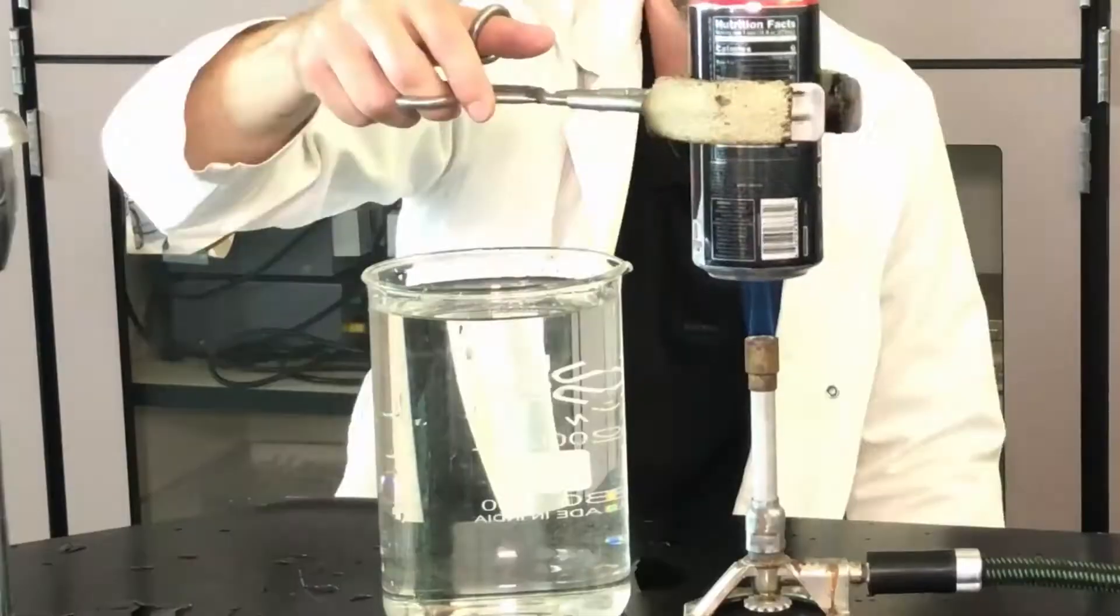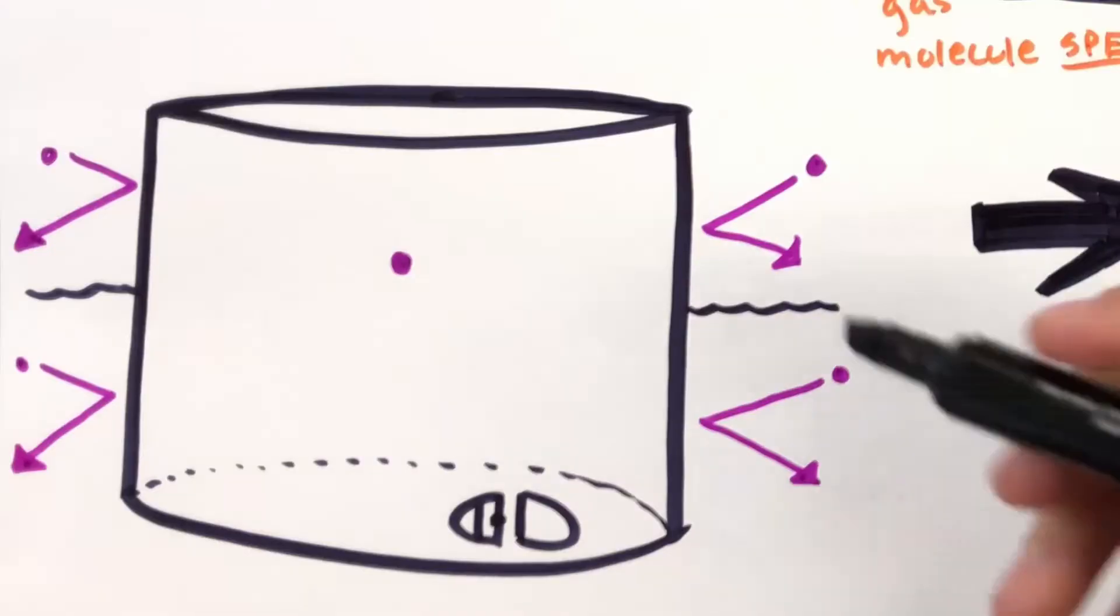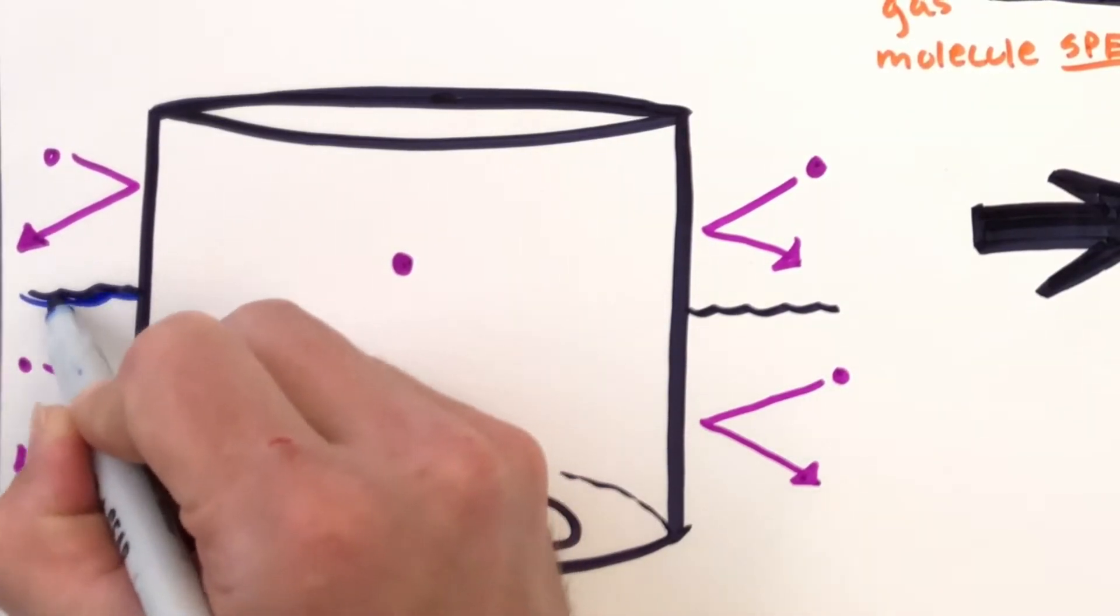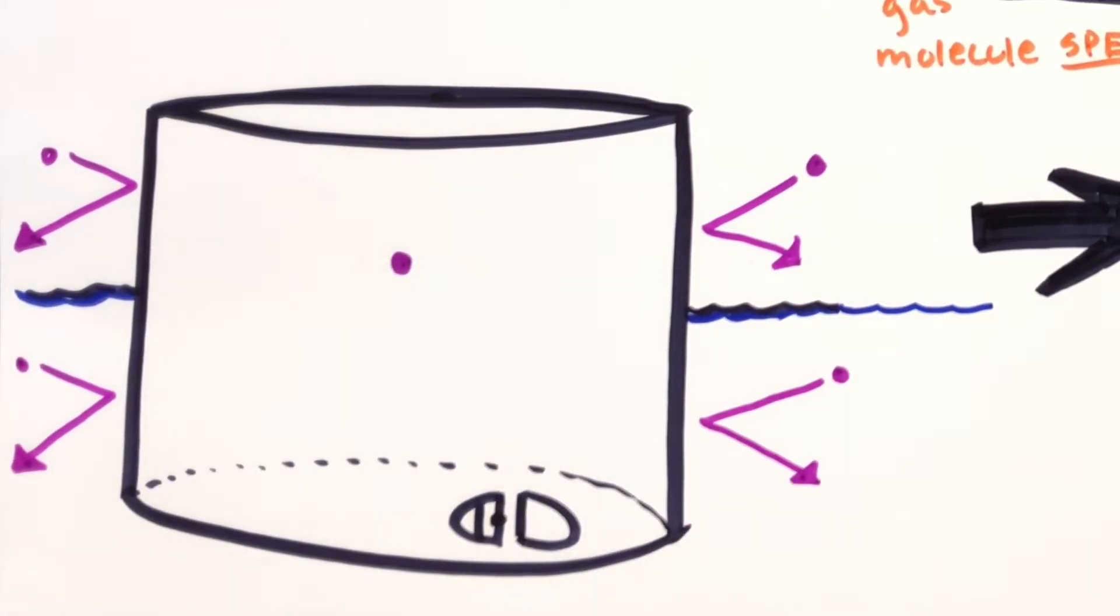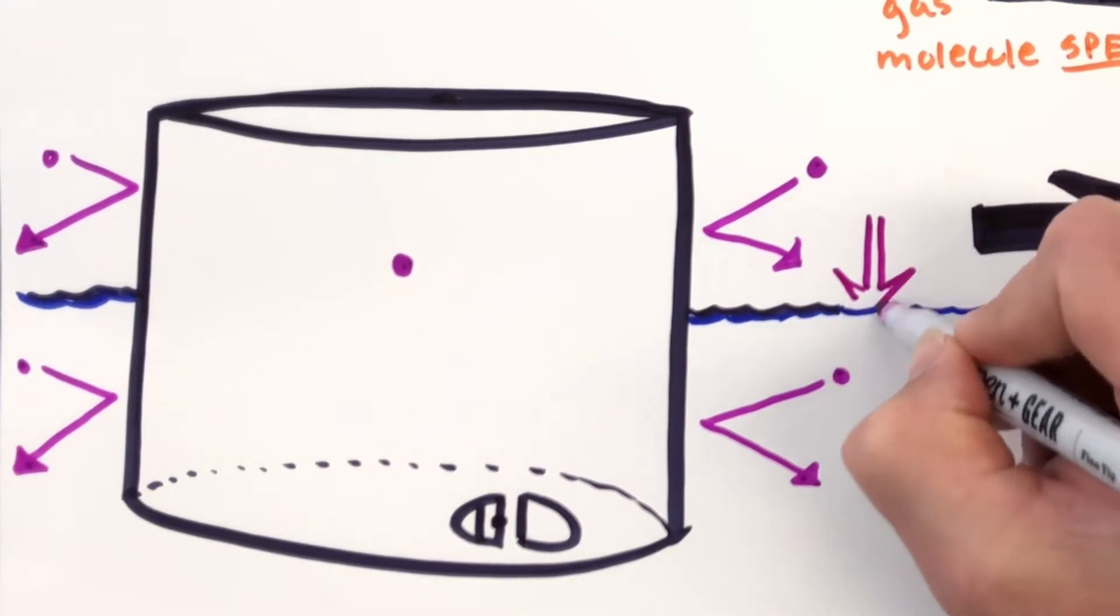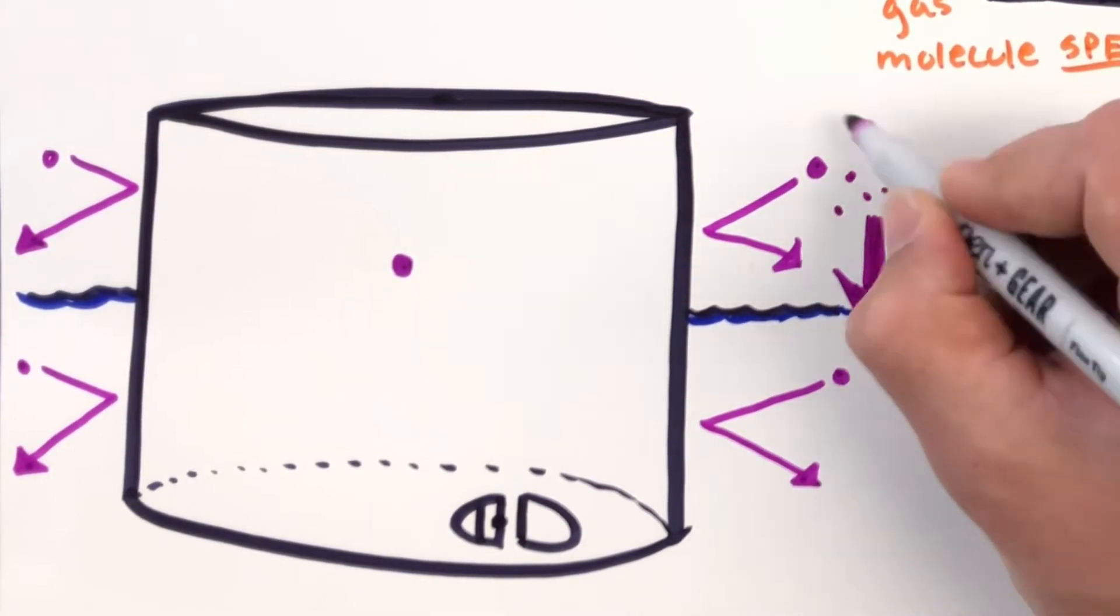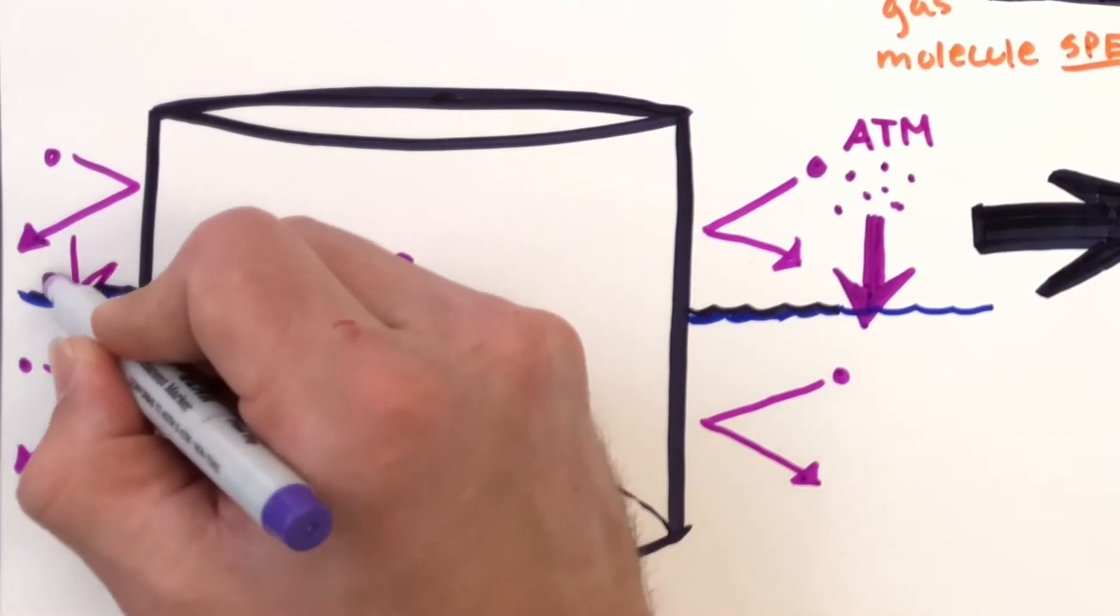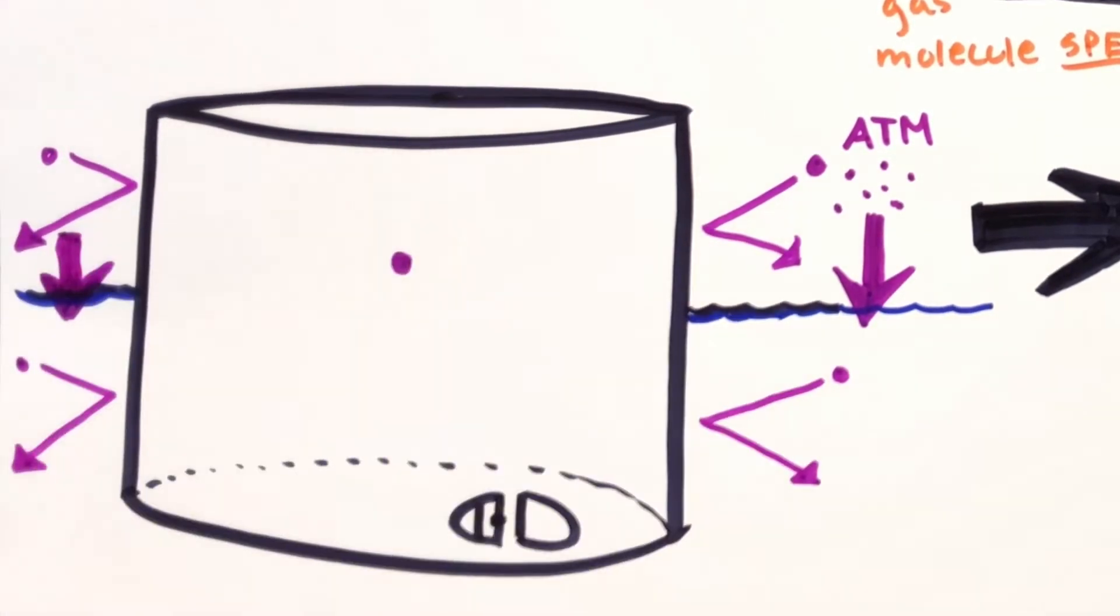And we flip it into this water. And what happens? Once we flip it in, we think about we have the atmosphere pushing on top of the water, pushing down on the water. We have our one little gas molecule that could keep that water from going in, pushing down against it. And let's think about energy for a moment.